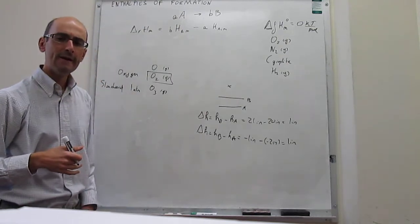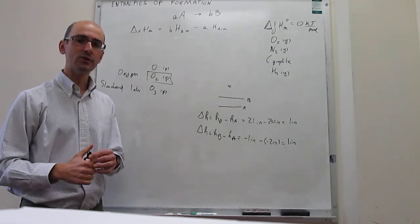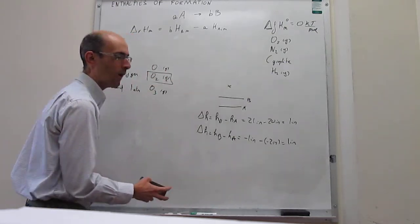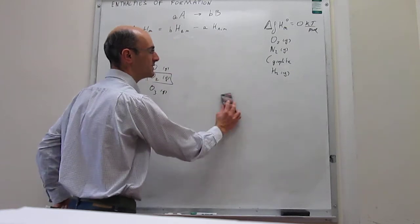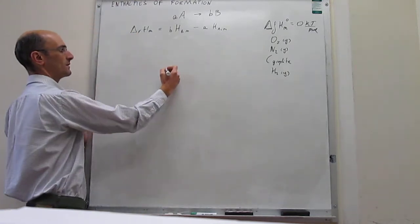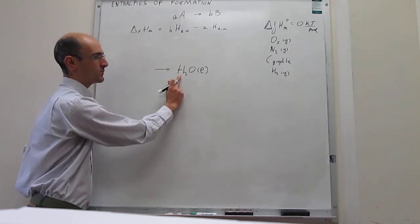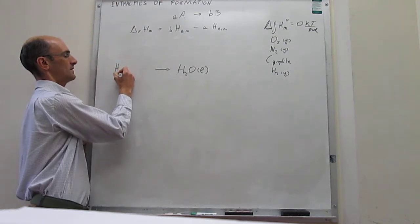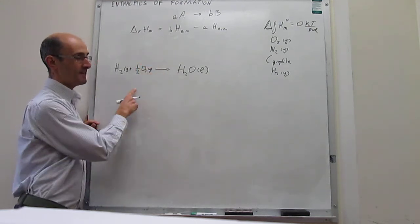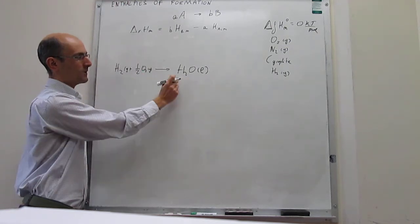We then need to come up with enthalpies of formation of all molecules with respect to that zero. Let's think about how water would work. Now that we have defined where the zero is, let's define what the enthalpy of formation of water is with respect to that zero. The way you do this is to come up with your molecule of interest — water as a liquid — from the constituent elements hydrogen and oxygen: H2(g) + ½O2(g) → H2O(l). This is what we call the formation reaction of water, because it forms water from the most stable allotropes of the constituent elements.